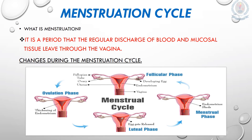Then, day 6 to day 10, the uterine lining, which is rich in blood capillaries, starts to thicken. We call this the thickening of the uterine lining. Then, day 11 to day 18, the mature egg is released into the fallopian tube from the ovary. This process is known as ovulation. The egg may be fertilized by a sperm during this period, so day 11 to day 18 is called the fertile period.